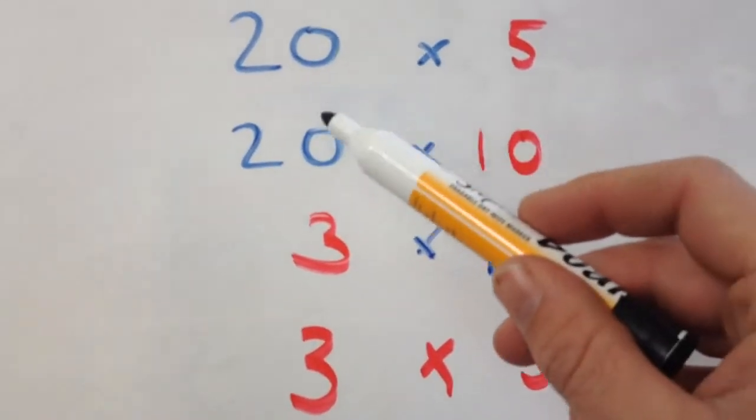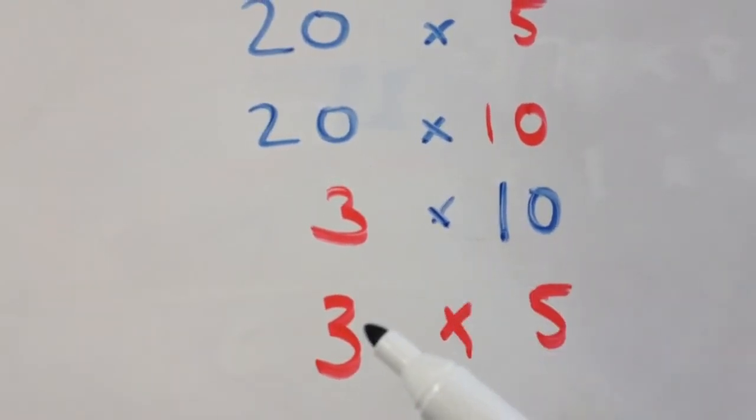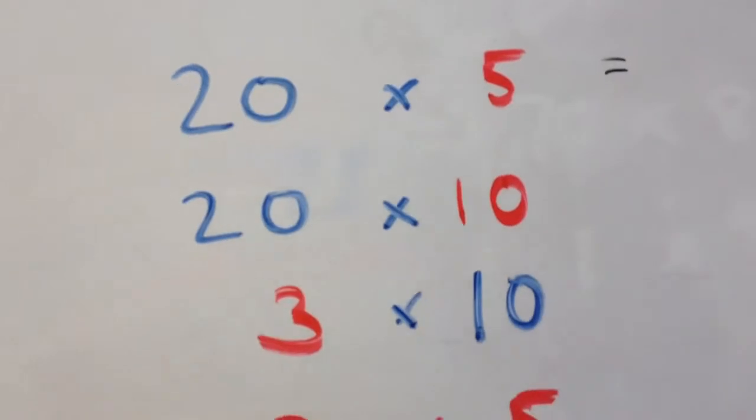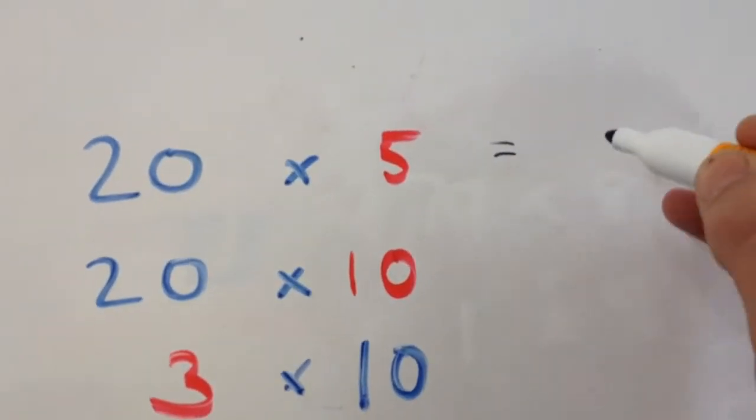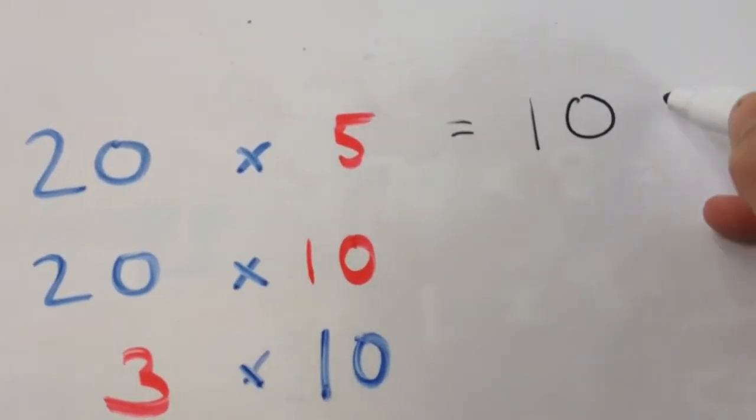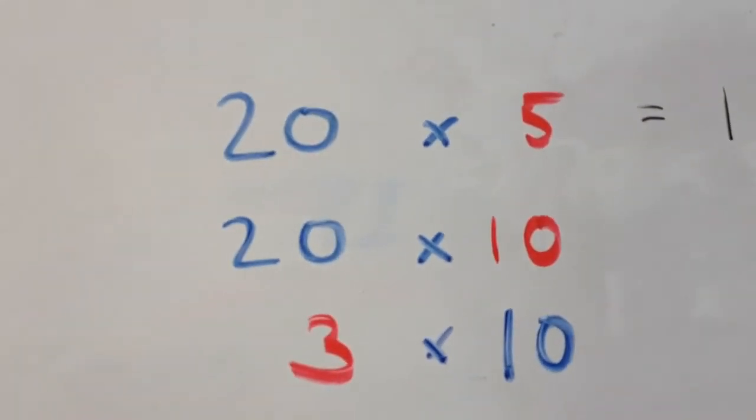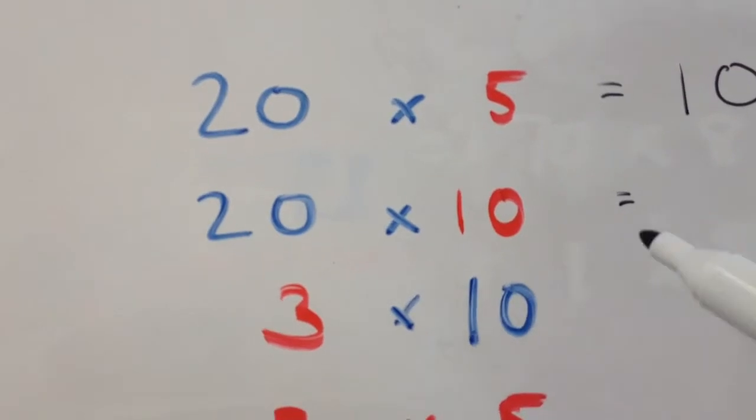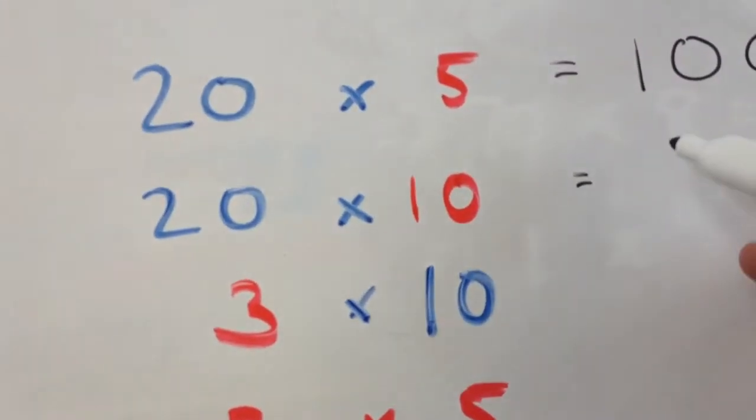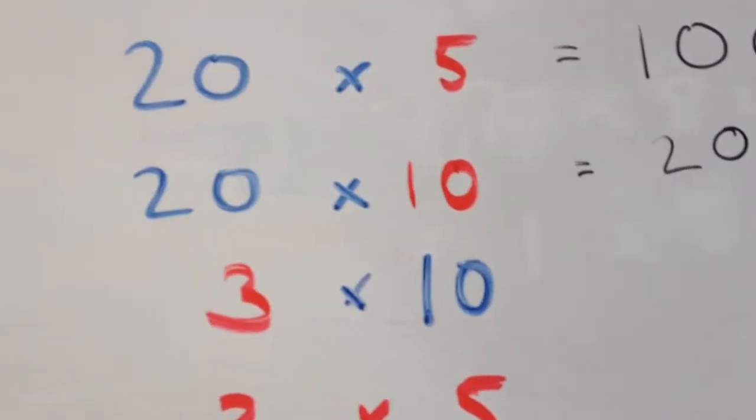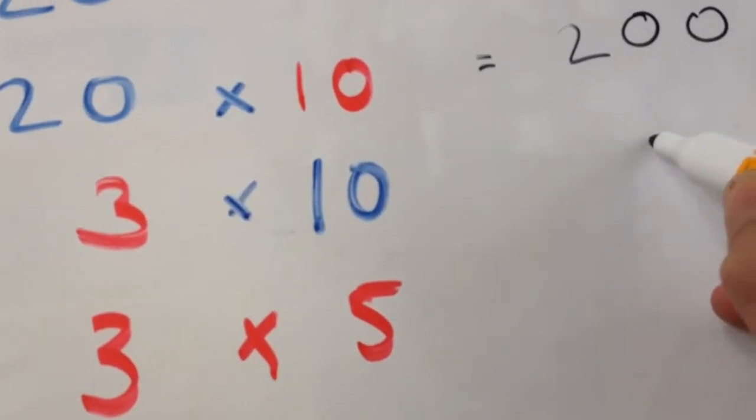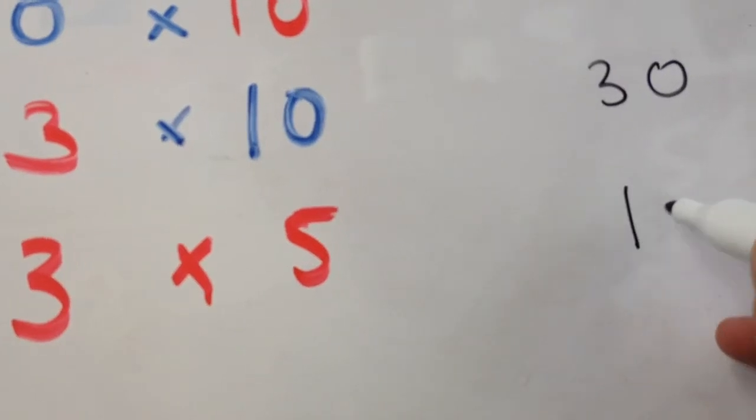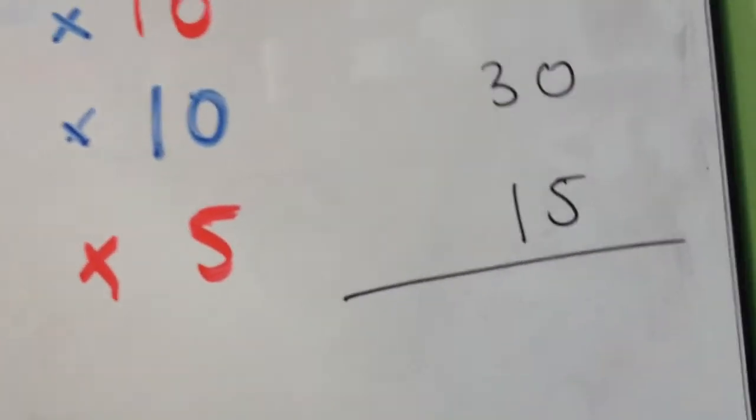So we can work all these through individually. 20 times 5, if you get your fingers and toes out, that's 100. We're going to keep it all in columns. 20 times 10, so remembering that whenever timesing any number by 10, you just add on another 0. So that will become 200. And 3 times 10 is 30. And 3 times 5 is 15. So it's really important you know your times tables.